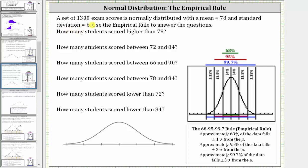A set of 1,300 exam scores is normally distributed with a mean of 78 and a standard deviation of six. Use the empirical rule to answer the questions.